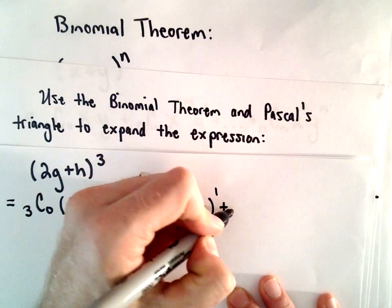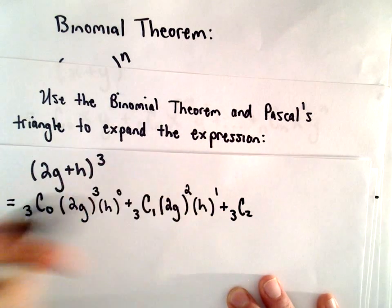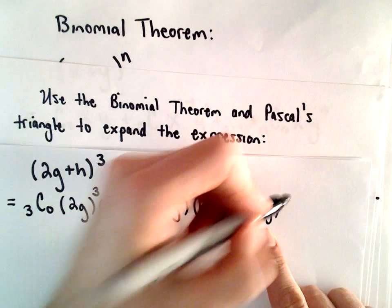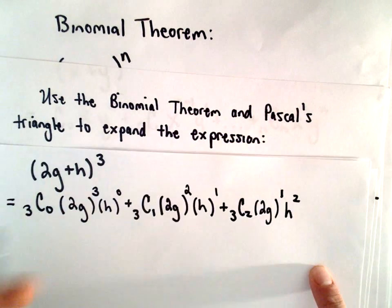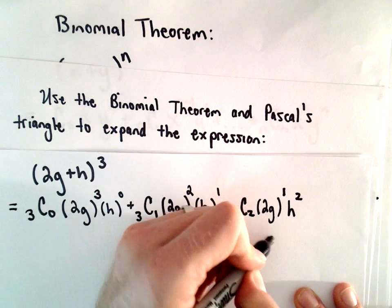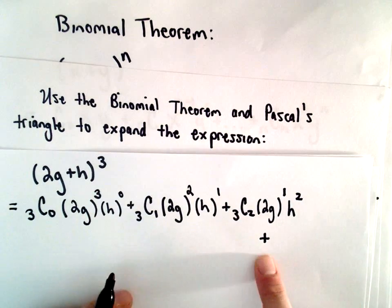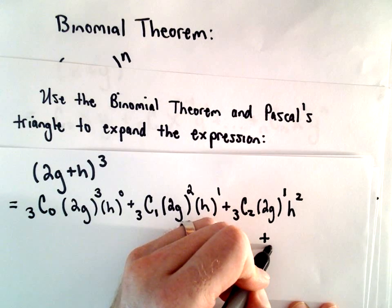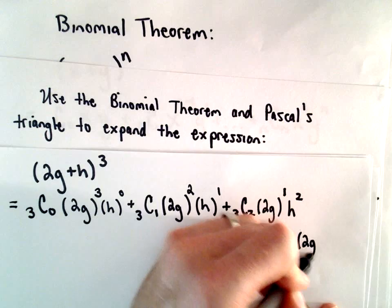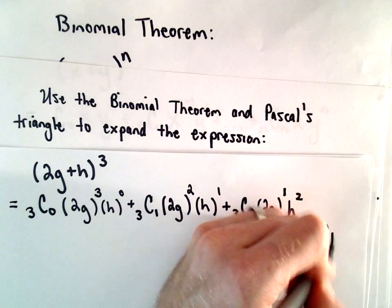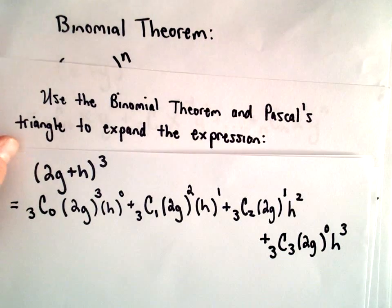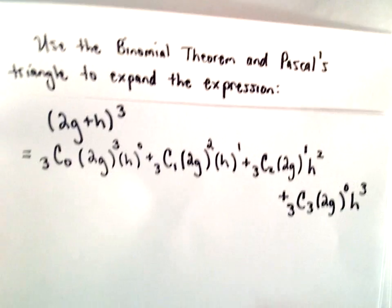So we would have 3 choose 2. We would have 2g raised to the first power. We would have h raised to the second power. And then one more term here. I'm going to give myself a little more room and drop it down. So we'll have 3 choose 3. We would have 2g raised to the zero power and h raised to the third power. We'll come back to the part about Pascal's triangle in just a second.